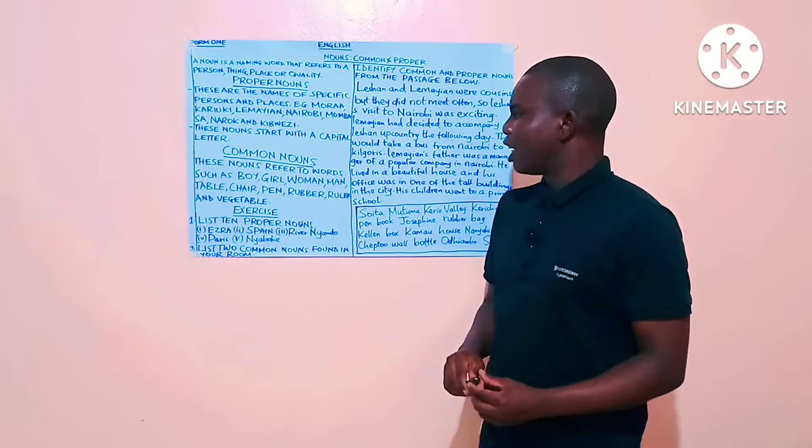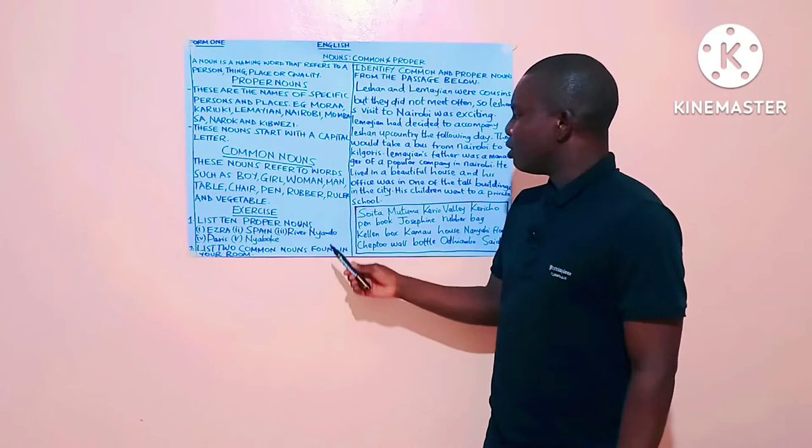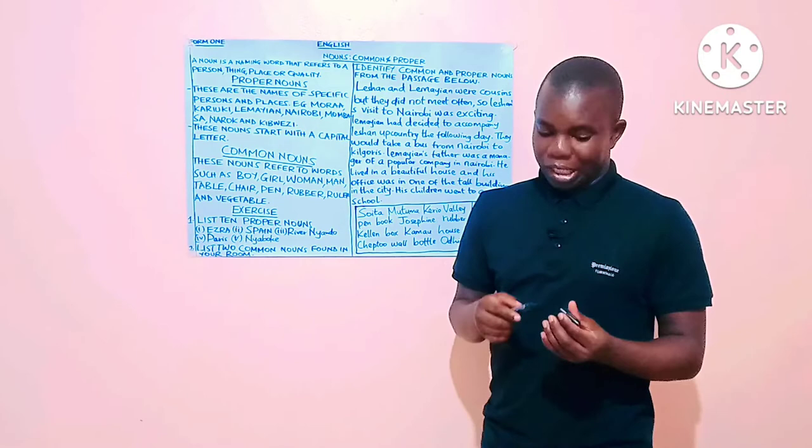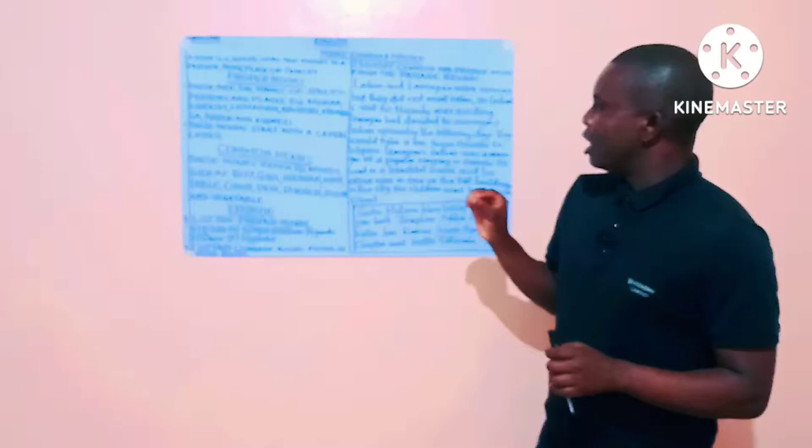Some of the examples we have here, we have boy, girl, woman, man, table, chair, pen, rubber, ruler, and vegetable. So, those are just examples of common nouns.